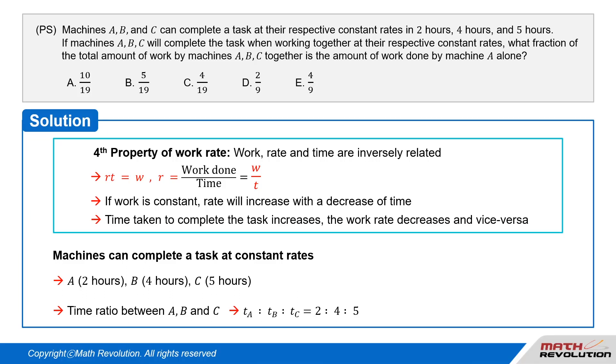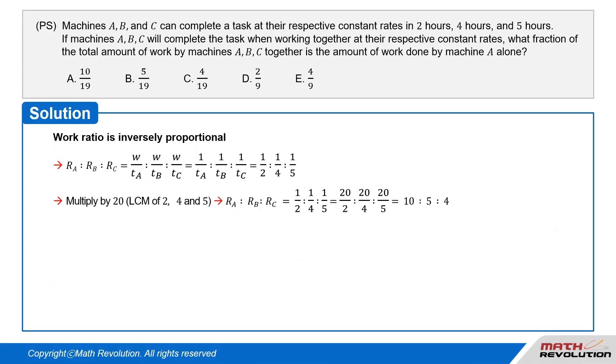Although the time ratio between A, B, and C is T_A : T_B : T_C, which equals 2 : 4 : 5, the work ratio is inversely proportional. In other words, R_A : R_B : R_C equals W/T_A : W/T_B : W/T_C, which equals 1/T_A : 1/T_B : 1/T_C, which equals 1/2 : 1/4 : 1/5.